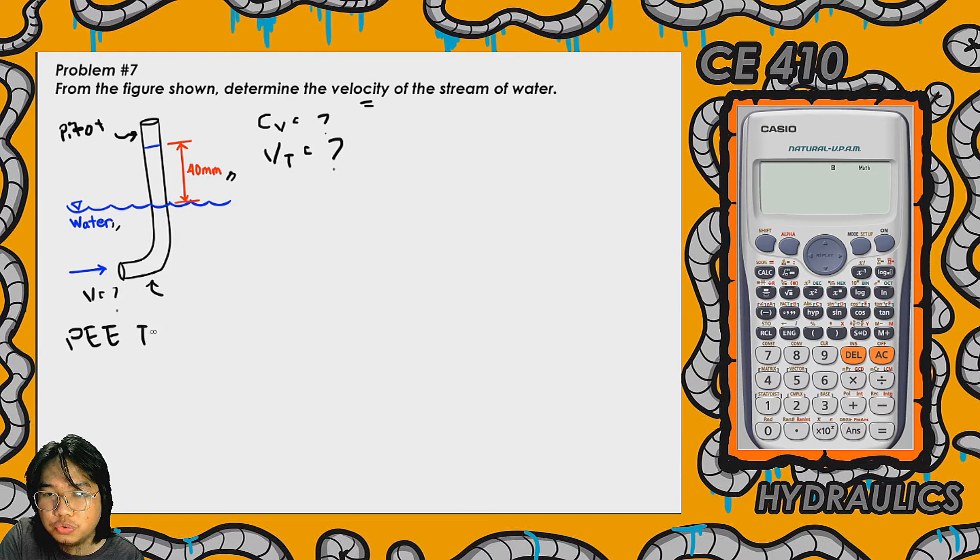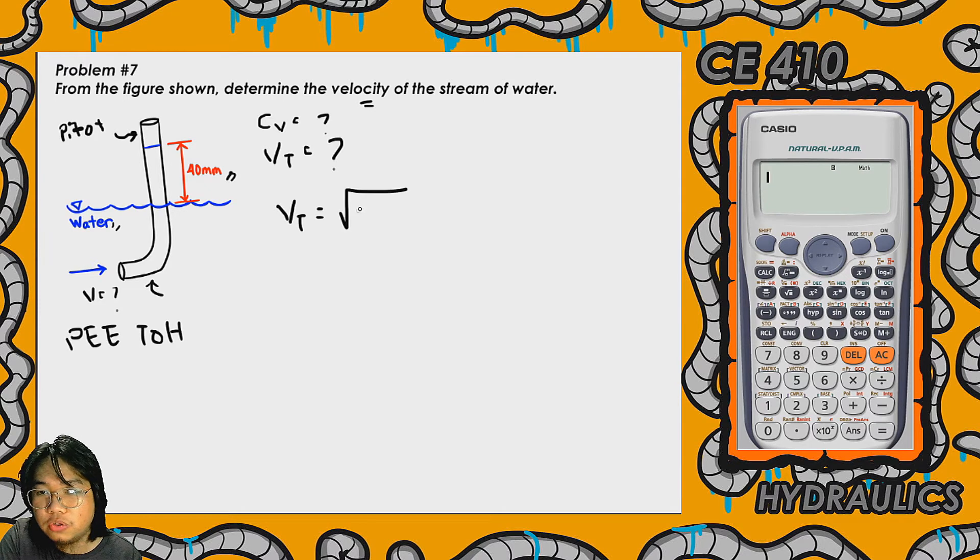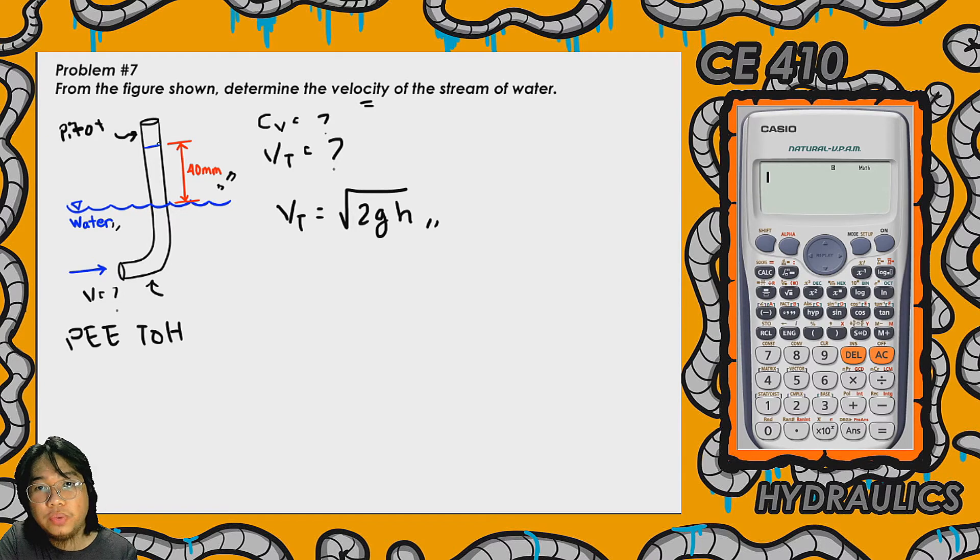Our formula would be: V_t (theoretical velocity) equals the square root of 2gh. The h we're referring to here is the height from the surface or reference surface of the liquid up to the level of the surface inside the pitot tube.